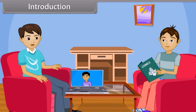Video chat can be done with the help of internet. It is an application of a communication system. In a communication system, there are three major components: sender, communication channel, and receiver. In case of video chat, I am the sender, internet is the communication channel, and my friend is the receiver. Students, today we will study more about the communication systems.